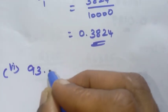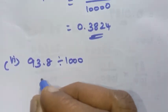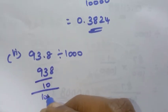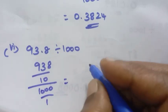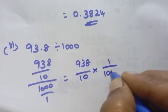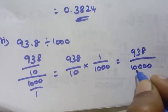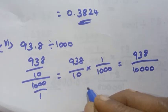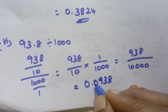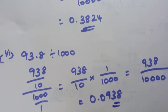Sixth problem: 93.8 divided by 1000. 93.8 has 1 decimal place, so it is 938 by 10. Divided by 1000, that is 938 by 10 into 1 by 1000, giving 938 by 10000 — 4 zeros. With 3 numbers, placing the point: 0.0938. That is the sixth answer.